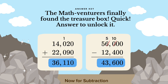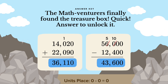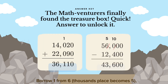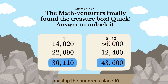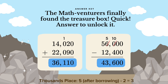Now for subtraction: write down the numbers. Step 2: subtract column by column starting from the right. Units place: 0 minus 0 is equal to 0. Tens place: 0 minus 0 is equal to 0. Hundreds place: 0 minus 4 — we need to borrow from the thousands place. Borrow 1 from 6; thousands place becomes 5, making the hundreds place 10. 10 minus 4 is equal to 6. Thousands place after borrowing: 5 minus 2 is equal to 3.